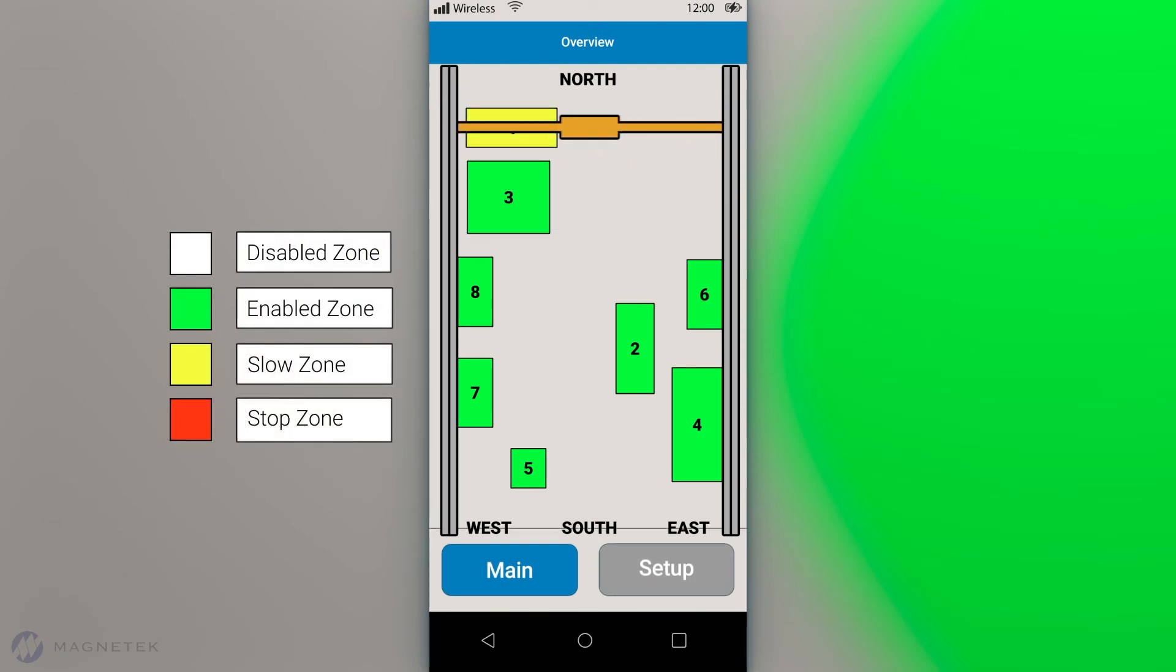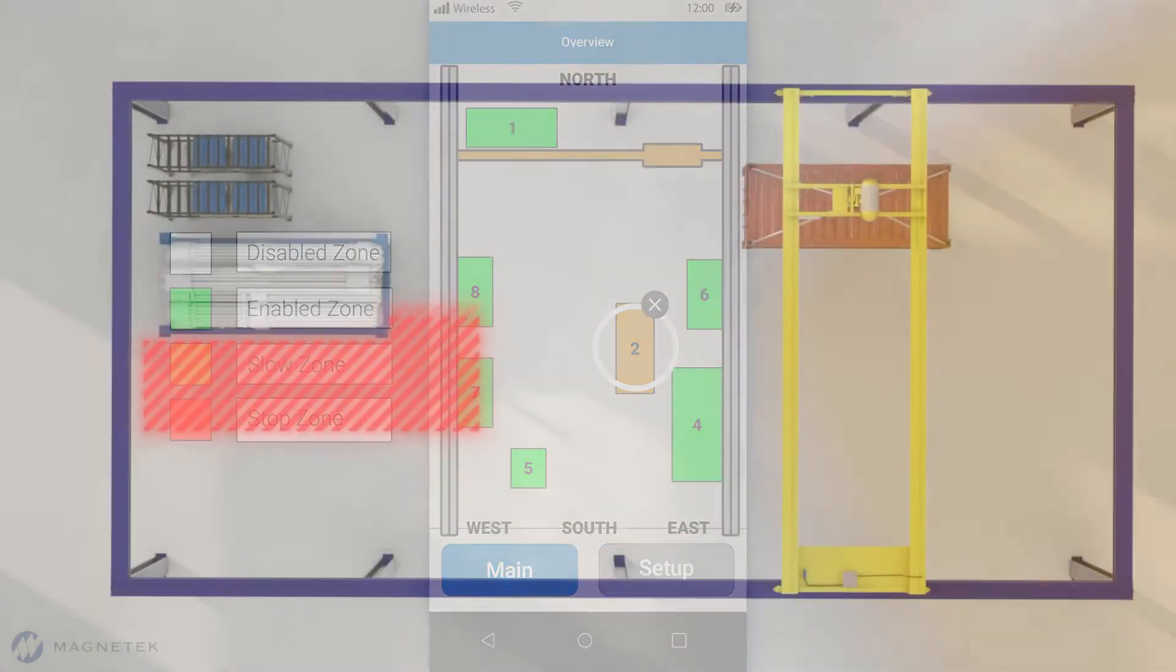And if process, plant, or crane conditions change, you can easily change or disable your system if needed. It's that easy.